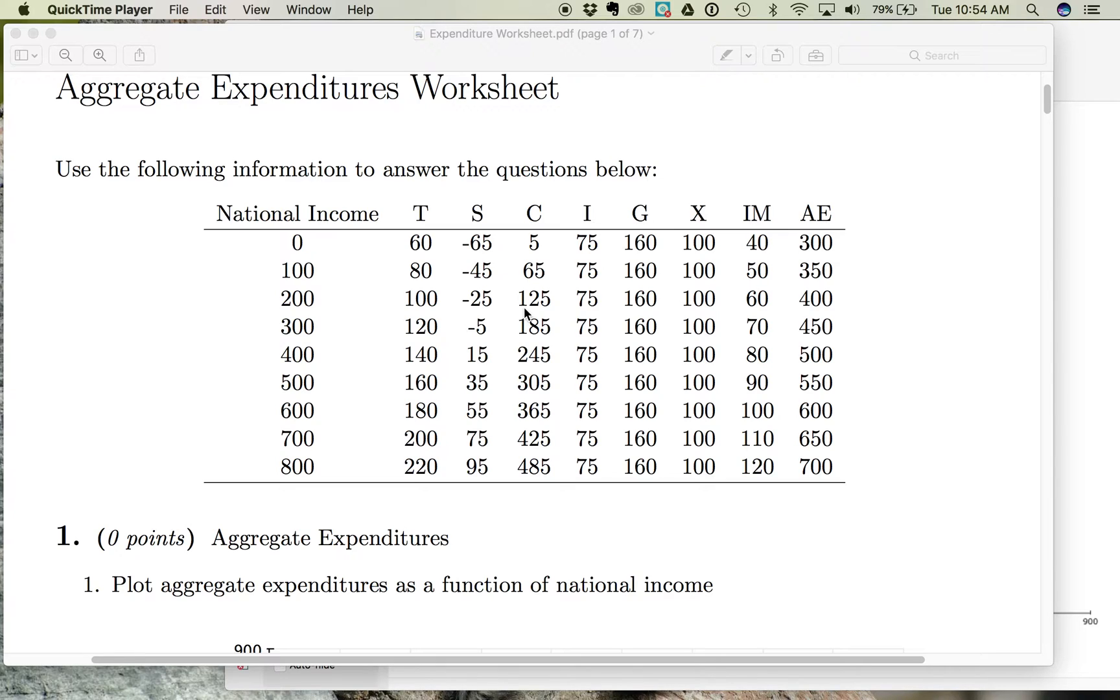Looking at household spending, we can see that even if income is zero, households do some spending. So $5 in this example. Those are the basic necessities, food and shelter, things that we have to buy even if we had no income.